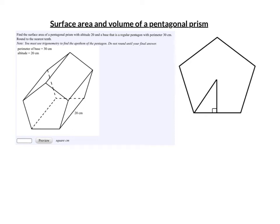Surface area and volume of a pentagonal prism. This question, if you read it, it says find the surface area, but for the purposes of doing examples, I'll do both surface area and volume. So let's begin with the surface area.